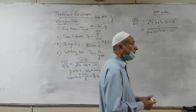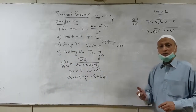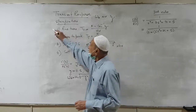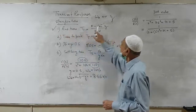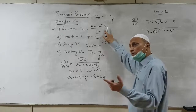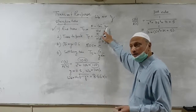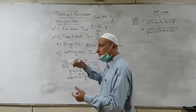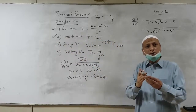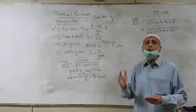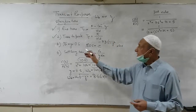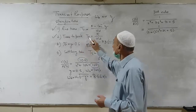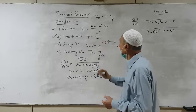The transient response is obtained through certain time specifications. These are the rise time, which is tr, given by this expression — you need not derive this expression, you can consult the book. Then we have the time to peak, that is, the time to reach the first overshoot, which is the peak. So tp is equal to pi divided by omega d.